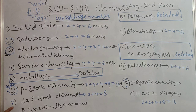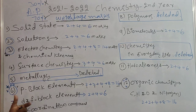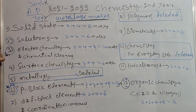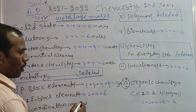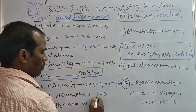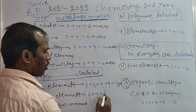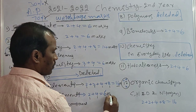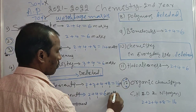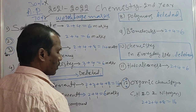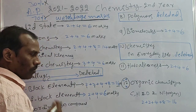Seventh topic: D and F Block Elements and Coordination Chemistry. Short answers 1, short answers 1, very short answers 1. Total marks here are 6 marks.